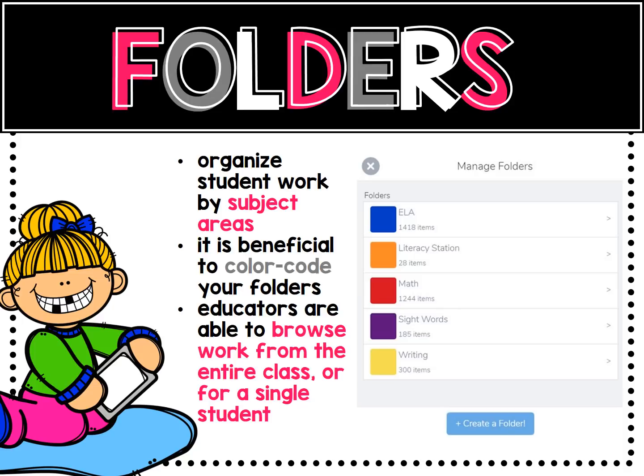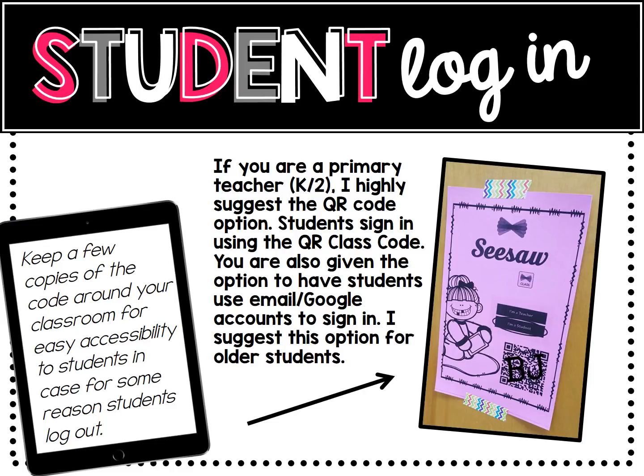Educators are able to browse work from the entire class or for a single student within the folder setting. For student login, there are two options: a QR code or signing in by email. If you are a primary teacher, K through 2, I highly suggest the QR code option. Students sign in by using the QR class code within the application. This code is given to you once your class is generated. Keep a few copies of the code around your classroom for easy accessibility in case students are logged out.